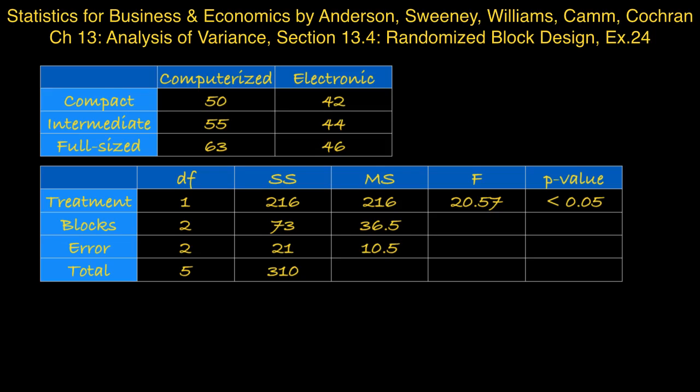And then the F statistic. The F statistic that's of most relevance here is the one for treatment. And that takes the mean square for treatment divided by the mean square for error. And that comes to 20.57.